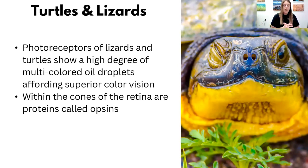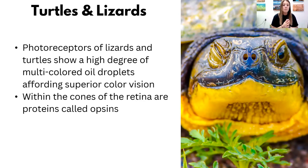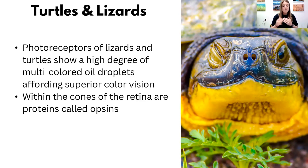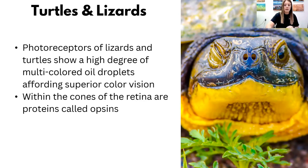Turtles and lizards don't have the best vision in the world, but the photoreceptors of lizards and turtles have multicolored oil droplets which help them have very good color vision. Within the cones of the retina, they have proteins called opsins that are sensitive to wavelengths of light. Some species can see in the UV range, some cannot. A lot of turtles and lizards can actually see far beyond the capabilities of humans — so people think we have really good color vision, but sometimes we're not even close to that of a turtle or a lizard.